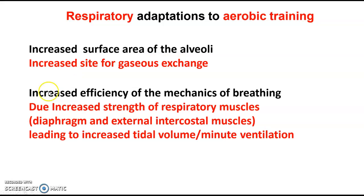On top of that, we also have an increased efficiency of the mechanics of breathing. From the mechanics of breathing, we had the diaphragm, external intercostal muscles, ribs, thoracic cavity volume, and pressure. You can't physically change the ribs, but you can change the muscles attached to or below the ribs — the diaphragm and external intercostal muscles. So we have increased efficiency of mechanics of breathing due to respiratory muscle hypertrophy — an increase in respiratory muscle size — which means you get more air in deeper, and more air out at a faster rate. These terms are called tidal volume and minute ventilation.